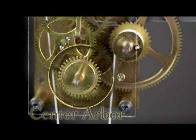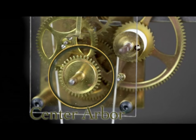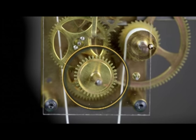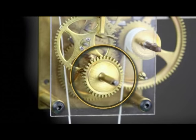In some movements, the center arbor is a direct part of the going train and plays a role in transferring power from the mainspring to the escapement.